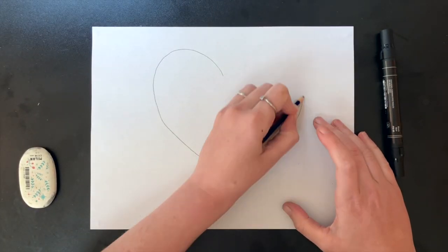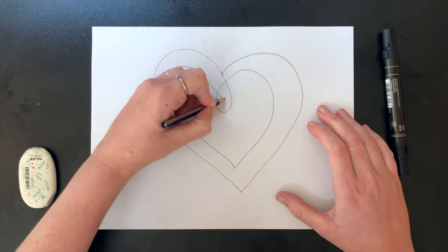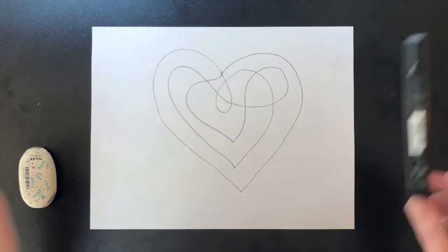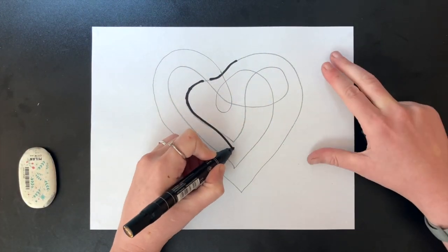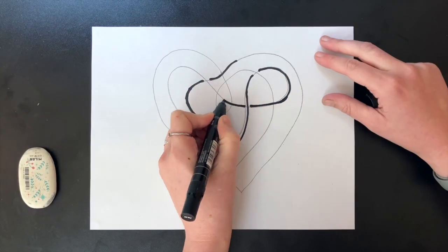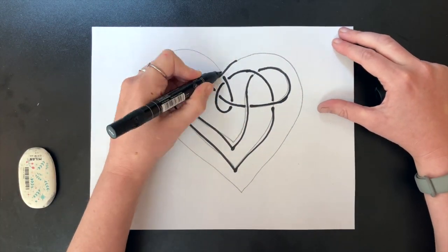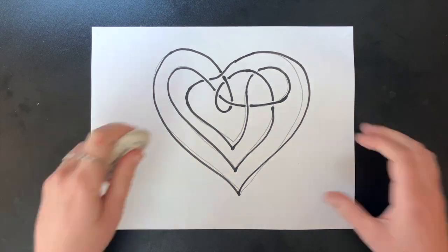Now that you've got the hang of scribble knots, go ahead and try some variations. Make a more complex scribble. Try using multiple lines or loops. Do all of your scribbles in the shape of a picture frame or a triangle or a heart like I'm doing.